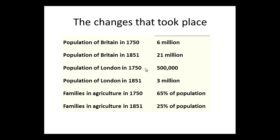The population in London — if the population in Britain increased some three and a half fold, the population in London, the big city, increased by a factor of 6. Suddenly we have 65% of the population working in agriculture, and that drops down to 25%. What we're seeing here is a big population expansion, populations moving into cities, and the reason for that is because the requirements of agriculture became less and less.